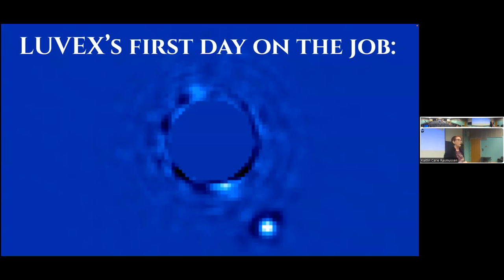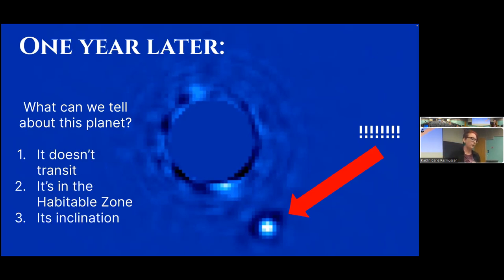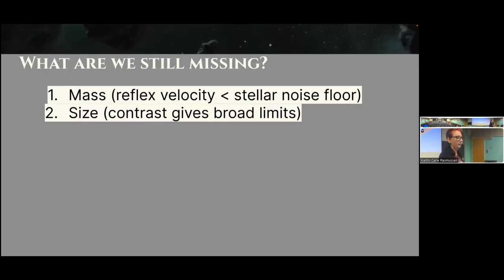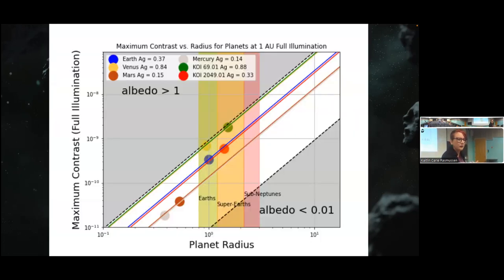This is a LUVOIR study. I'm working on asking how LUVOIR is going to contribute to the search for Earth analogues. On its first day on the job, LUVOIR takes its wonderful coronagraph, puts it over the star, and we find a planet — probably 10⁻⁹ to 10⁻¹⁰ times fainter than its host star. We follow it around for a year and learn about its inclination and that it's probably in the habitable zone. But we're missing its mass — the reflex velocity of an Earth analog is below the motion of the star's surface, so we hit that noise floor. We won't have good orbital parameters or a reliable size either, though we can constrain size from brightness.